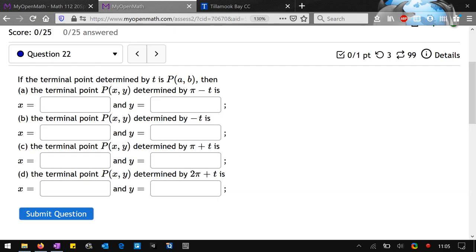We're going to look at 10.2, question number 22. And this question, they give us a point on the unit circle. They don't give us any information whatsoever about the coordinates, other than their names are A and B.